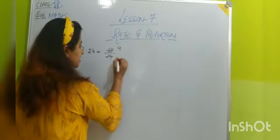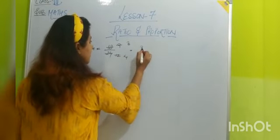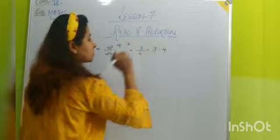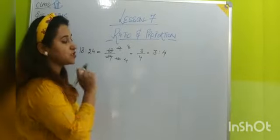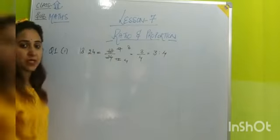Now cut by 2. 2 9s are 18, 2 12s are 24. 3 3s are 9 and 3 4s are 12. That is 3 upon 4 and that is 3 ratio 4. So 3 ratio 4 is the simplest form of 18 ratio 24.